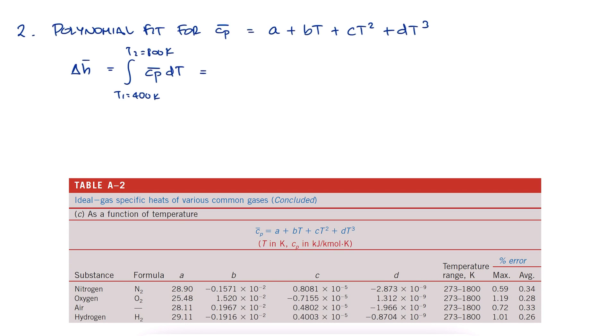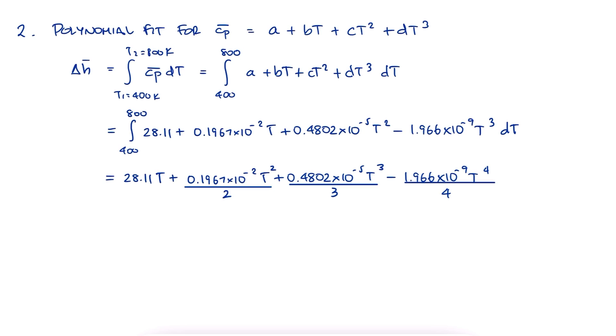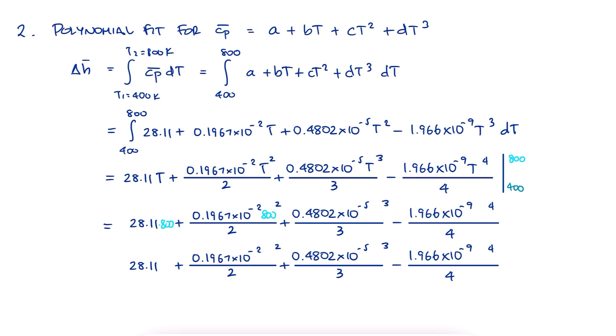This table is usually called ideal gas specific heats of various common gases as a function of temperature. With A, B, C, and D, we integrate with respect to T and evaluate at T800 and T400 and subtract to find the value of the defined integral. This is equal to 12,244 kJ per kilomole.